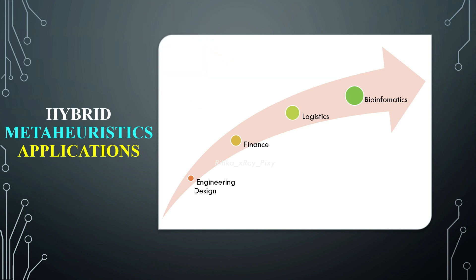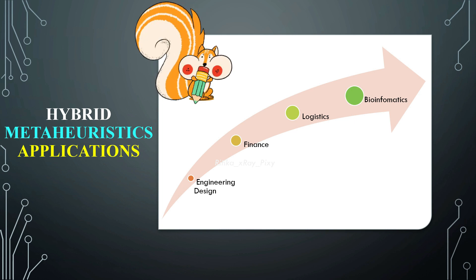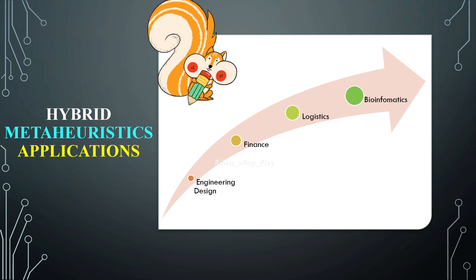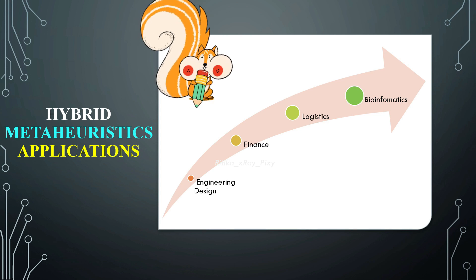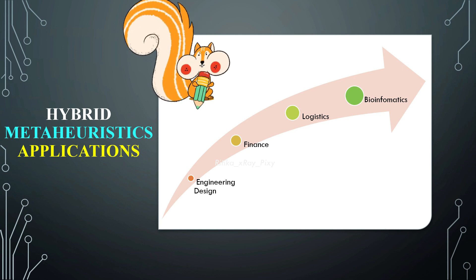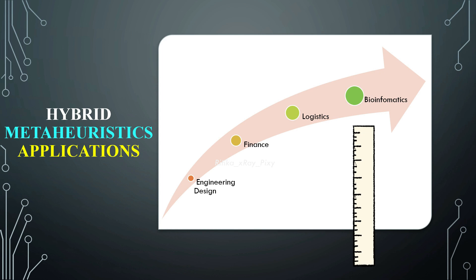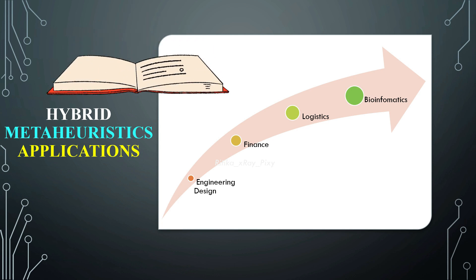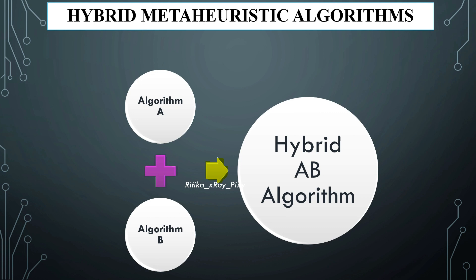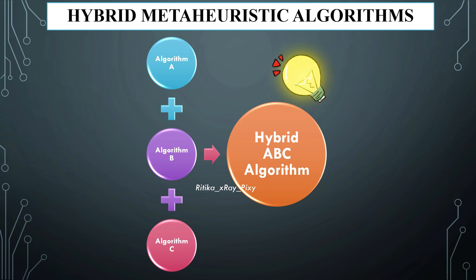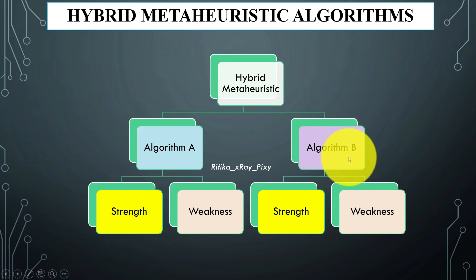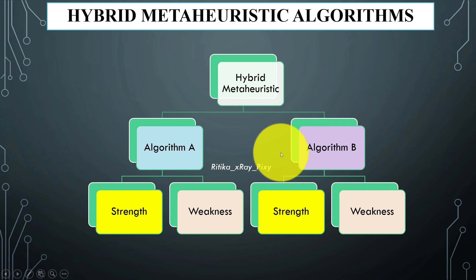Hybrid metaheuristic algorithms are used in a wide range of applications where traditional or single metaheuristic methods may not provide satisfactory results. We can use hybrid metaheuristic algorithms to solve engineering design problems such as design of electric circuits or mechanical components, financial modeling, image processing, computer vision problems, transportation problems, and others. In hybridization, two or more metaheuristics are combined to create a more powerful and effective algorithm.